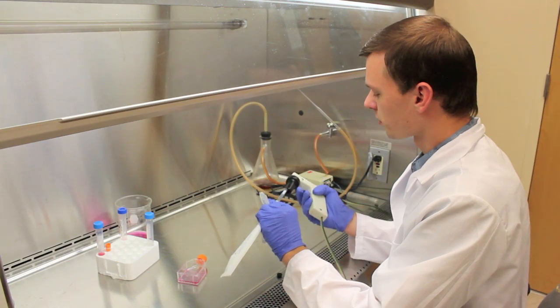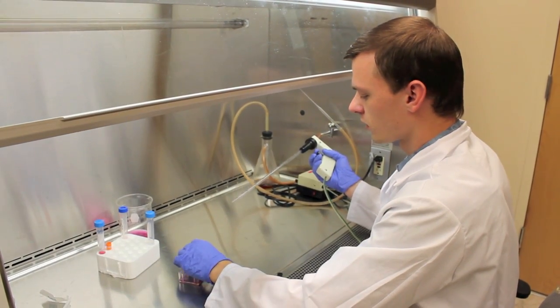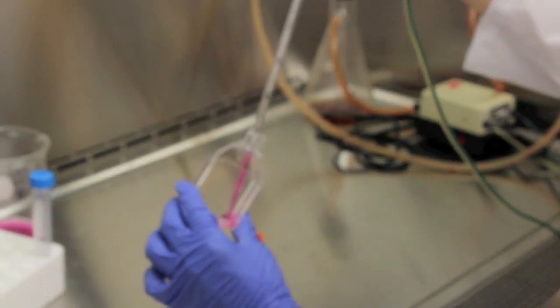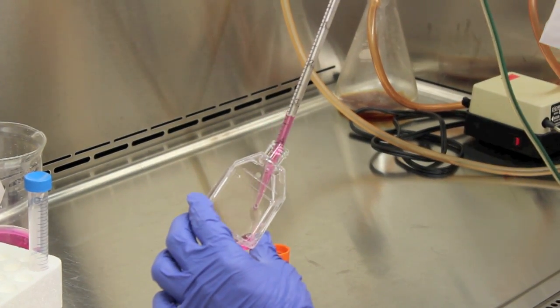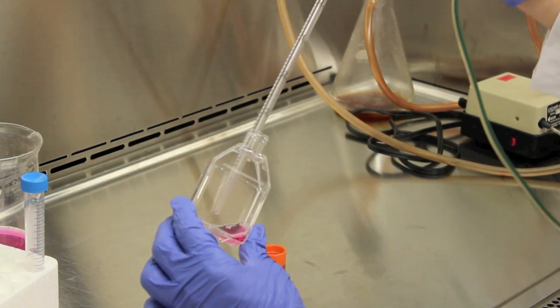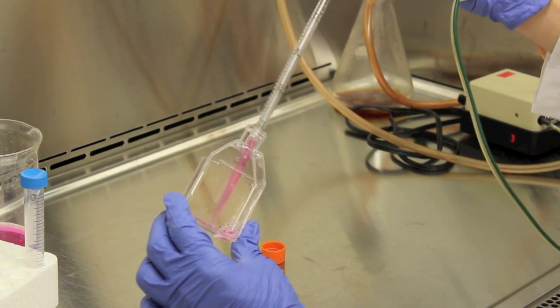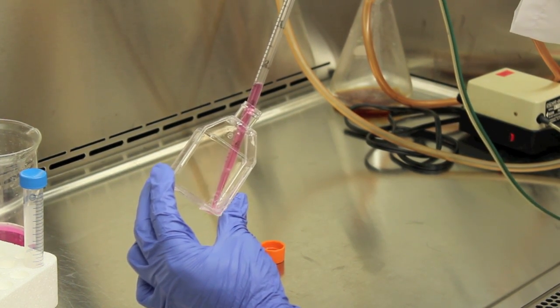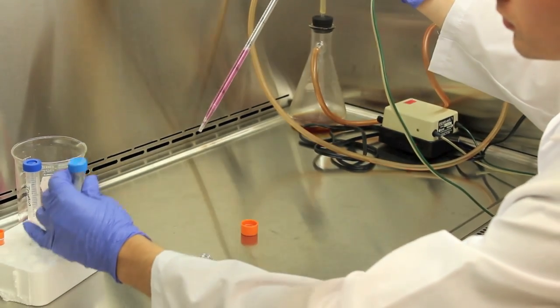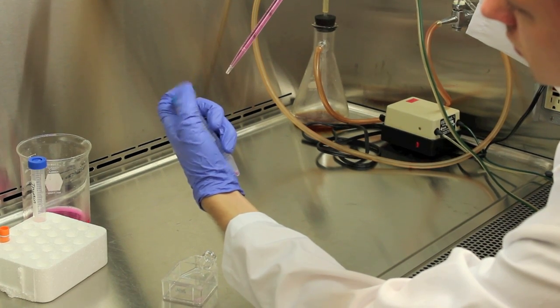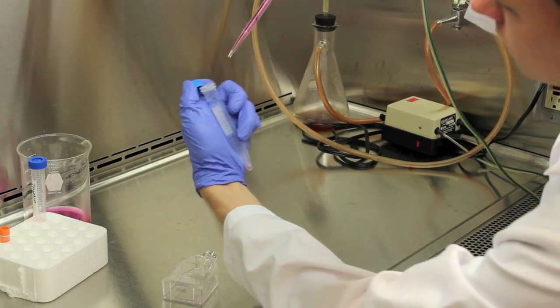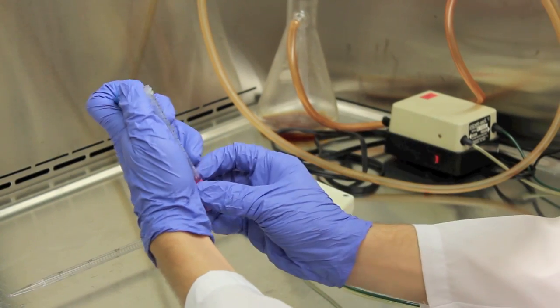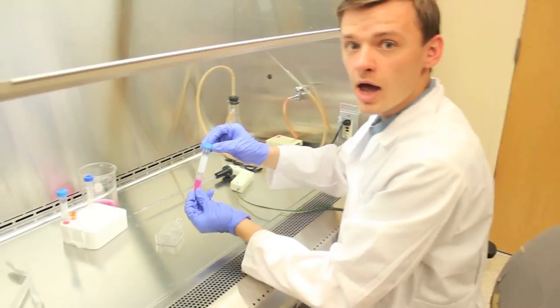We're going to be using a 5 milliliter pipetter. We're going to take some media and I'm going to wash the walls of the flask to make sure that the cells are off and all in the media. Now I will transfer the cells with media into the centrifuge tube. Now I will centrifuge this.